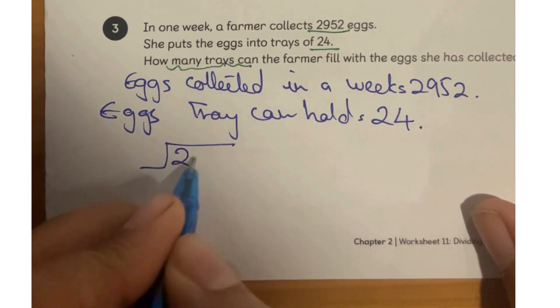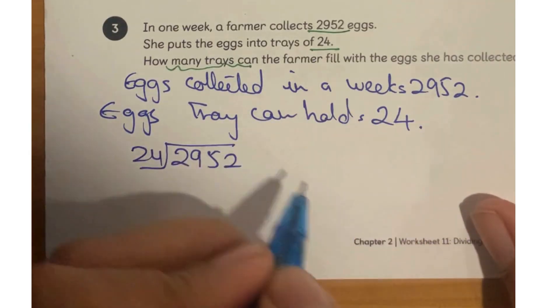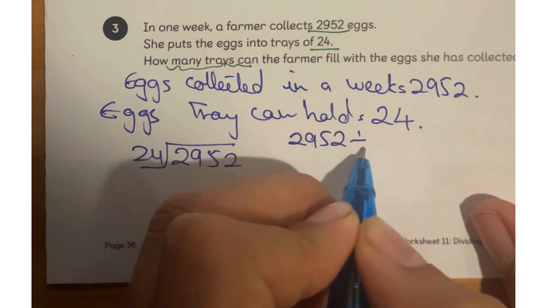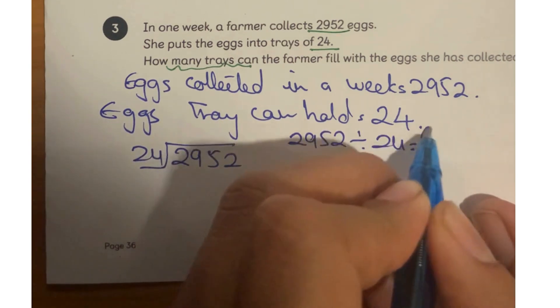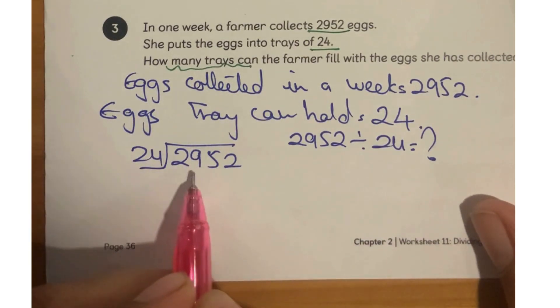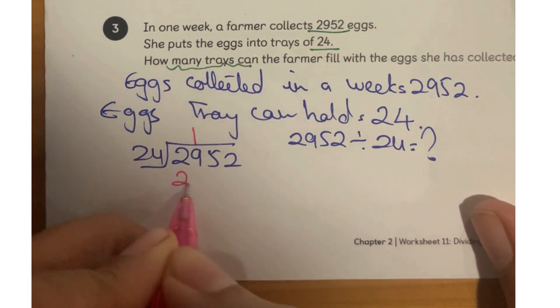So my first statement will be, eggs collected in a week equals 2952. Eggs tray can hold is 24. She puts in the trays of 24. Now let's have the grid. 2952 divided by 24. Third statement is, 2952 divided by 24 is how much? Then we have our grid. Now on our grid, but of course we can't exceed the 29 for 24.